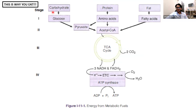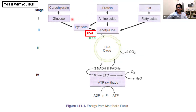You eat because your food has macronutrients in the form of carbohydrates, in the form of proteins, in the form of fats or lipids. These get broken down in the GI tract to glucose, amino acids, and fatty acids. When glucose enters cells, it's converted into pyruvate by glycolysis.